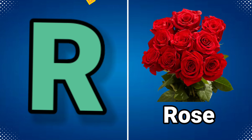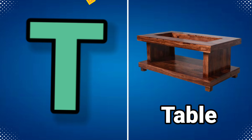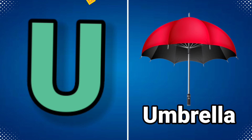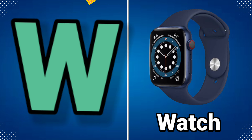R for rose, S for saw, T for table, U for umbrella, V for vegetable, W for watch.